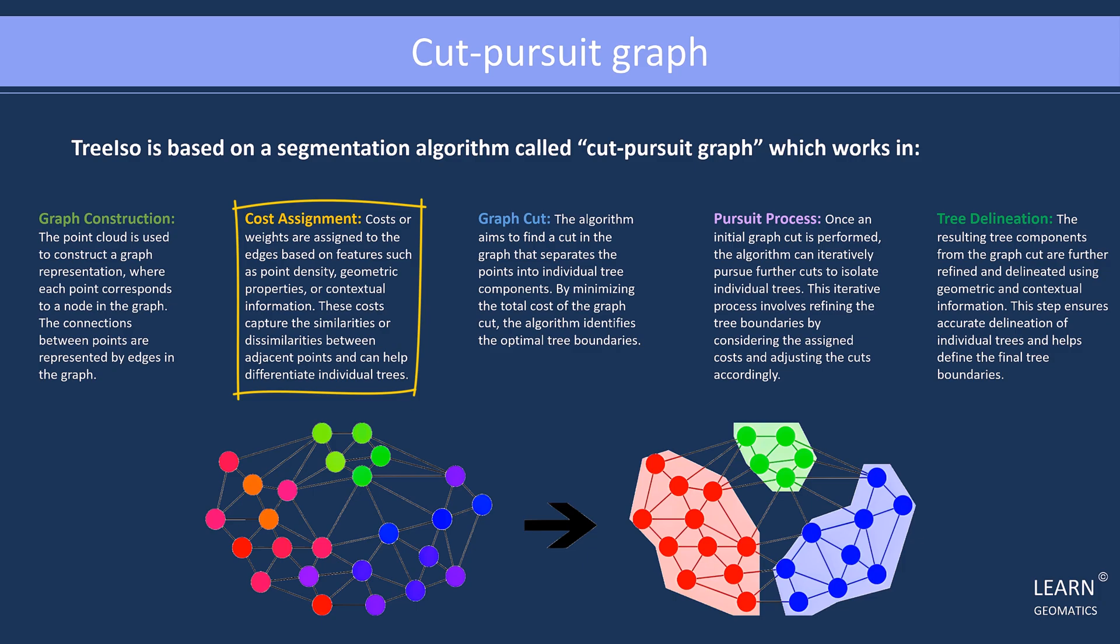The algorithm then aims to find a cut in the graph that separates the points into individual tree components. By minimizing the total cost of the graph cut, the algorithm identifies the optimal boundaries for each tree.